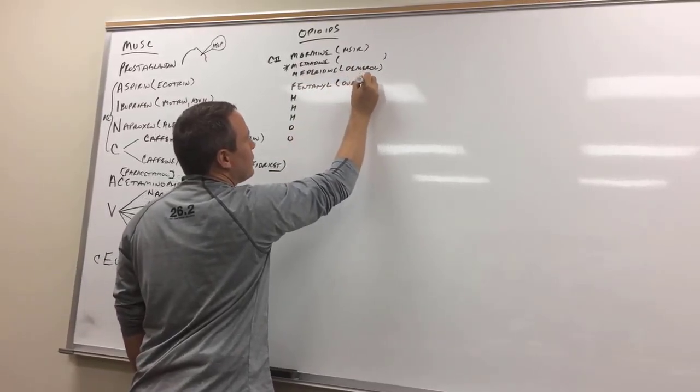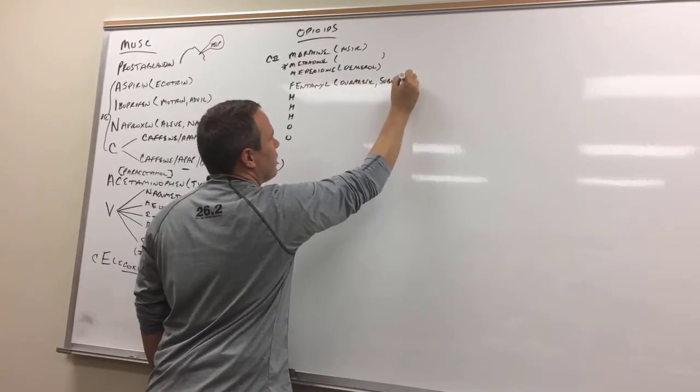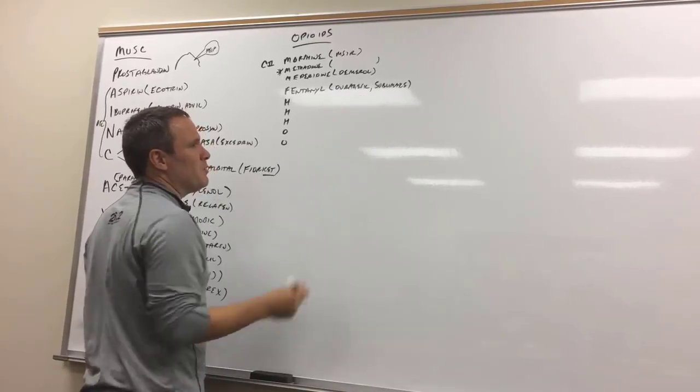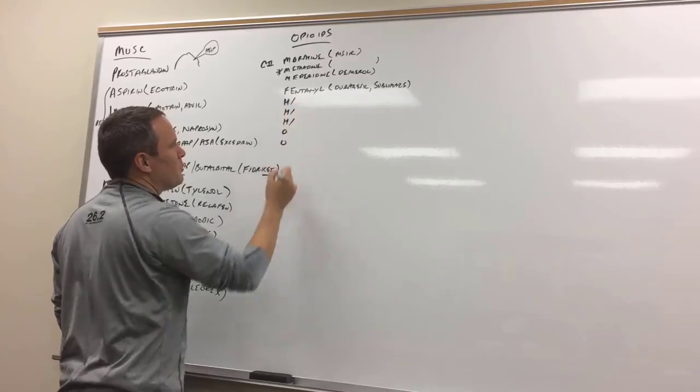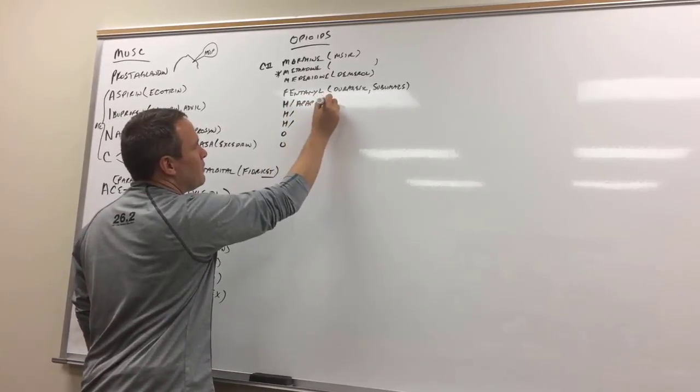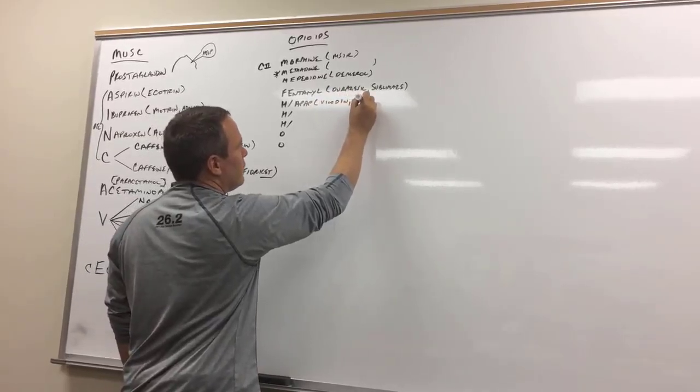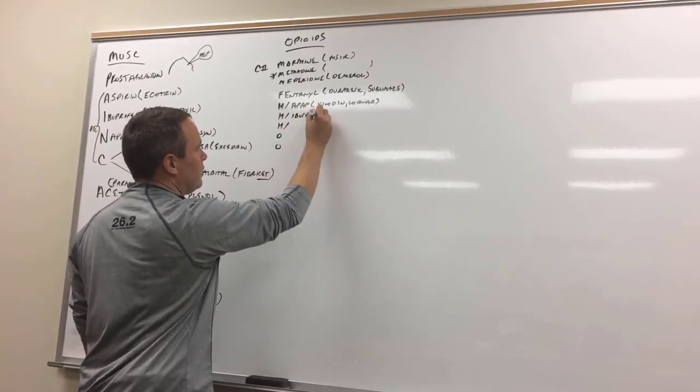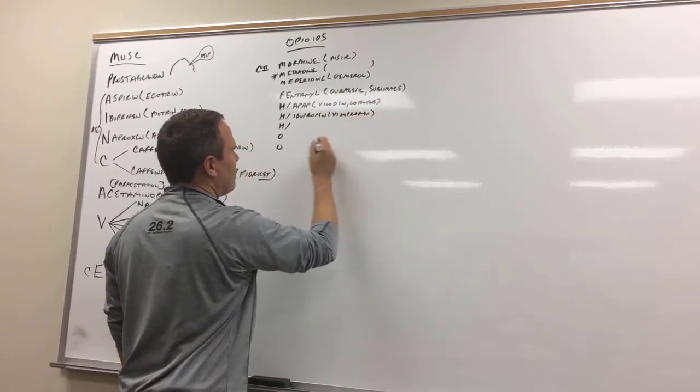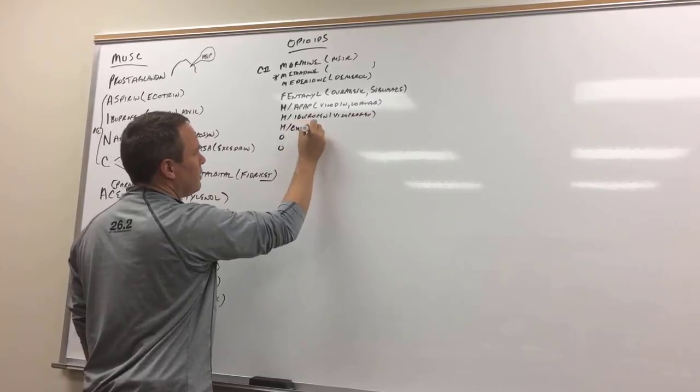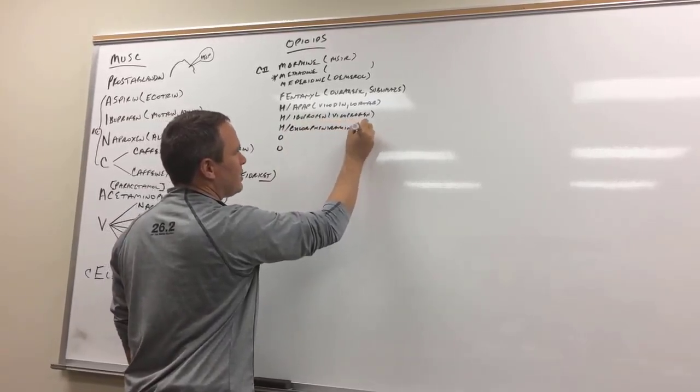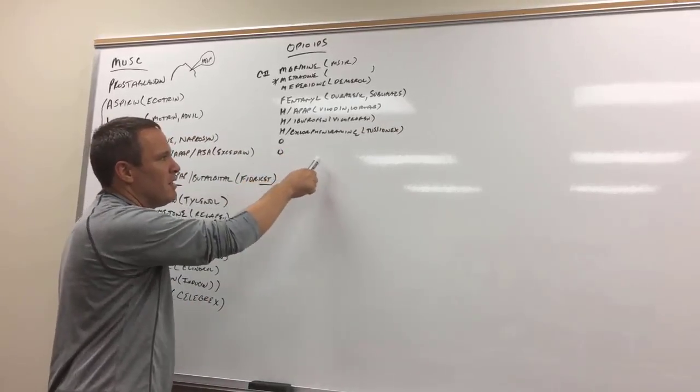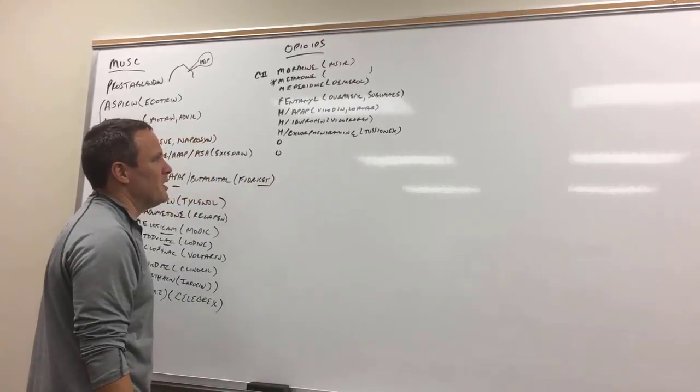Fentanyl, which is Duragesic if you're talking about the patch, or Sublimaze. I feel like you end up in a maze because it's pretty strong. Duragesic, a durable analgesic because it works as a patch. Then hydrocodone with acetaminophen, which is Vicodin and Lortab. Hydrocodone with ibuprofen, which is Vicoprofen. And then this kind of goofy one, hydrocodone with chlorpheniramine, which is Tussionex. You've got an addicting medicine that tastes like a pina colada, it's pineapple flavored.